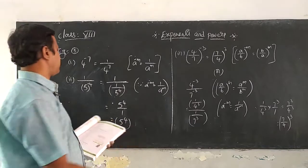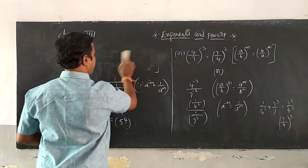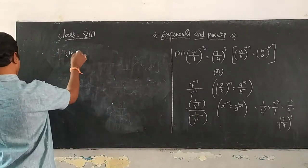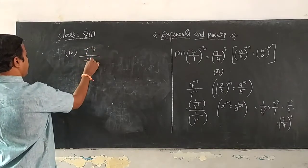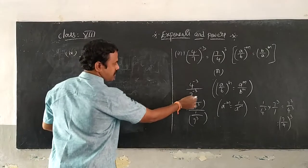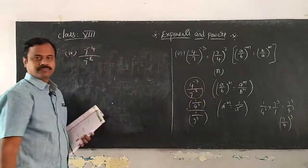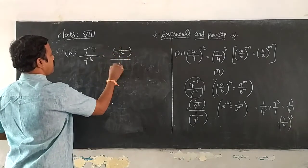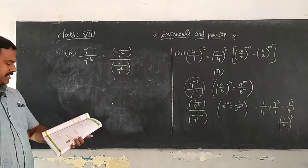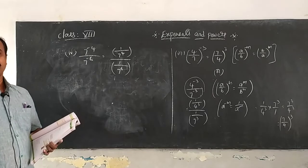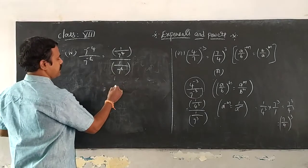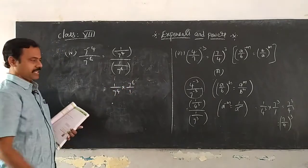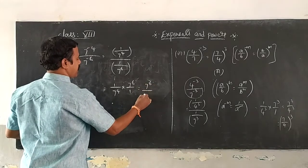Now the fourth question in Example 3: 7 power minus 4 upon 7 power minus 6. Using the formula a power minus m equals 1 by a power m, change them to 1 by 7 power 4 divided by 1 by 7 power 6. This can be changed to 1 by 7 power 4 multiplied by 7 power 6 by 1, which equals 7 power 6 by 7 power 4.